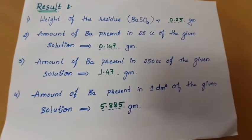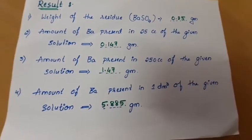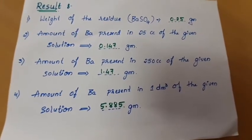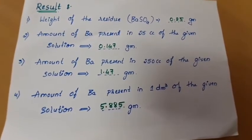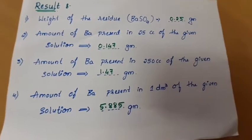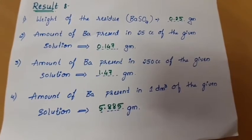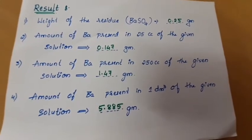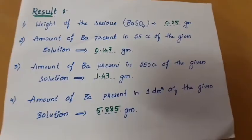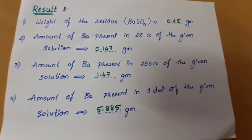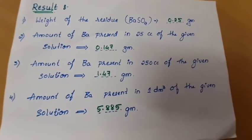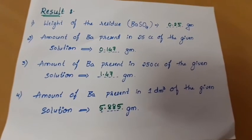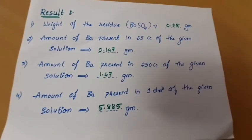Amount of barium present in 1000 cc (1 dm³) of the given solution = 1.47 × 4 = 5.885 g. Result: weight of residue (barium sulfate) = 0.25 g; barium in 25 cc = 0.147 g; barium in 250 cc = 1.47 g; barium in 1000 cc or 1 dm³ = 5.885 g. Thank you.